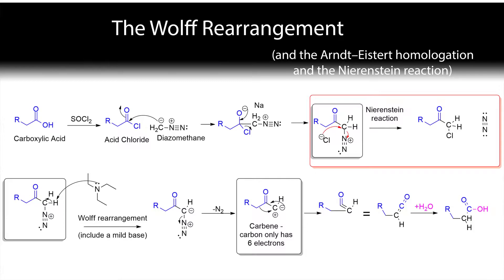Or you can use the same reaction in slightly different conditions to do the Nierenstein reaction, which lets you take a carboxylic acid chloride and make an alpha-halo ketone.